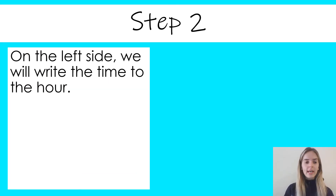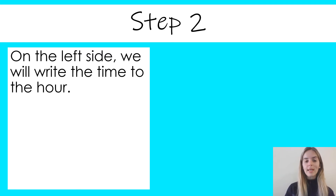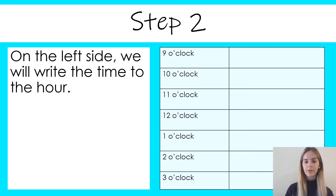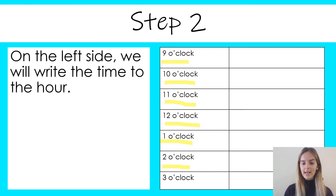Step two says on the left side we will write the time to the hour. Think back to when we were going through all of our o'clock times. We're going to write a few of them on a piece of paper for our school day, starting with nine o'clock, then ten o'clock, eleven o'clock, twelve o'clock, one o'clock, two o'clock, and lastly three o'clock because that's when we go home.